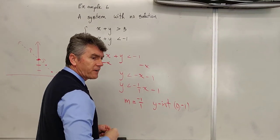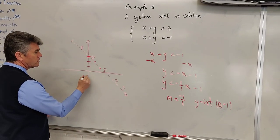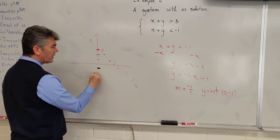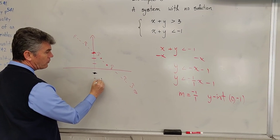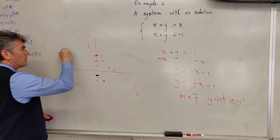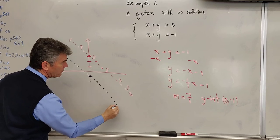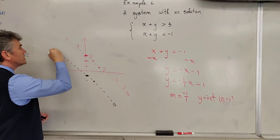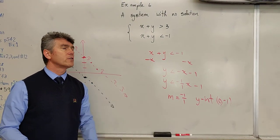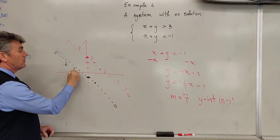I will use a different color. So start by plotting the y intercept, 0 comma negative 1. From there, go one unit down and one to the right. That is your slope. And then draw your line, draw a dashed line once more, because it just says less than. So no point on the boundary line satisfies the inequality and then shade below.